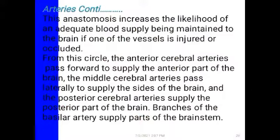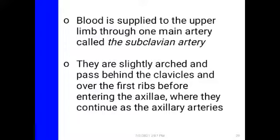This anastomosis increases the likelihood of adequate blood supply even when one blood vessel becomes occluded, ensuring vital organs are always supplied. The upper limbs — the hands — are supplied through one main artery called the subclavian artery, with a right and left subclavian artery. These arteries pass behind the clavicles (collarbones) and over the first rib before entering the axilla.